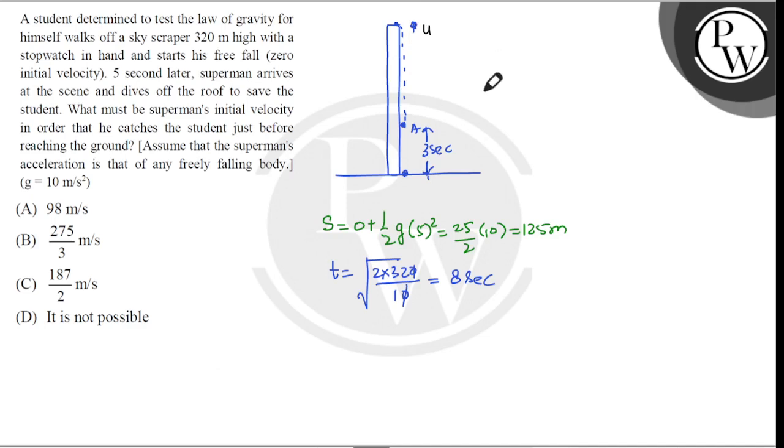In 3 seconds from top to bottom, the velocity will be u and net displacement is 320. So 320 equals ut plus 1 by 2 acceleration, which is 10, into 3 squared. So 320 equals 3u plus 9 into 10 is 45.